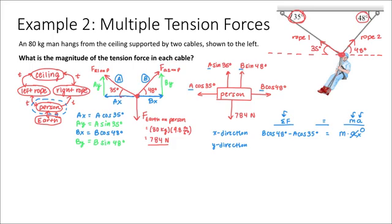Looking at the sum of forces in the y direction: the two upward forces A sine 35 and B sine 48 are added together (positive), and we subtract 784 newtons for the only downward force. That equals the mass of the person times the acceleration in the y direction, which is again zero. We now have two equations and two unknowns — A and B.